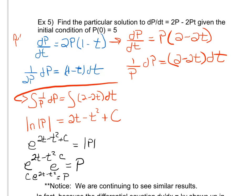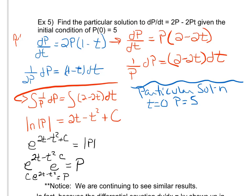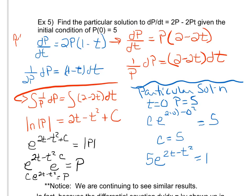Now to find the particular solution, I use the initial condition p(0) equals 5. When t equals 0 and p equals 5, I substitute into the general solution: c times e to the (2 times 0 minus 0 squared) equals 5. That's c times e to the 0, and since anything raised to the 0 power is 1, I get c equals 5. My particular solution is p equals 5 times e to the (2t minus t squared).